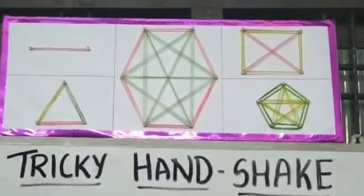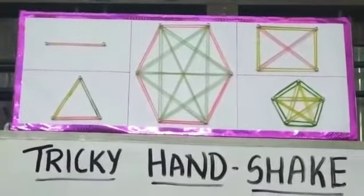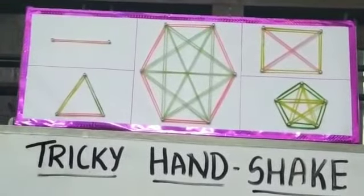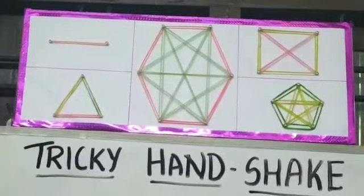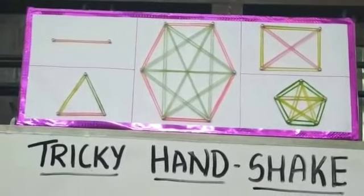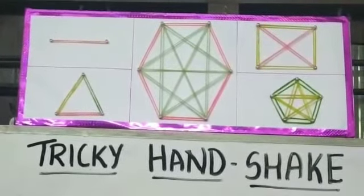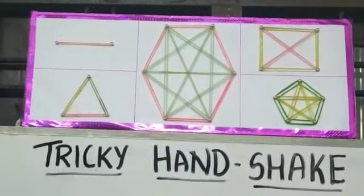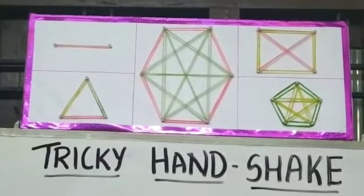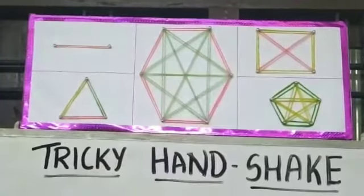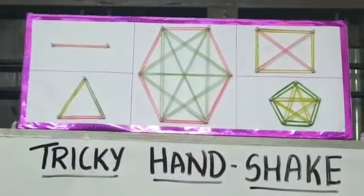First, in the first case, we can see two points and there is one line segment joining them. Now we are going to see the non-collinear points in an increasing way. First, that is three points, so we have three line segments joining them. Then in case of four points, we have six line segments joining them.